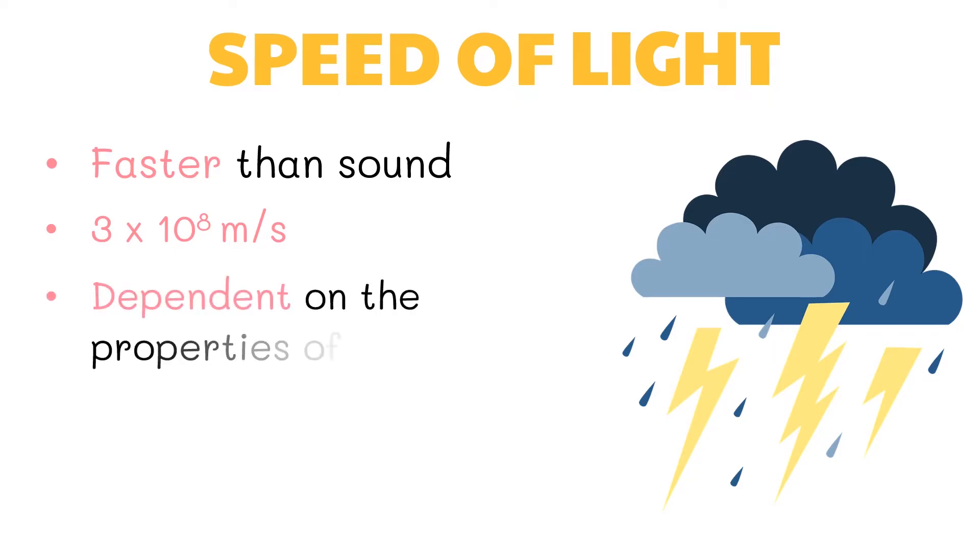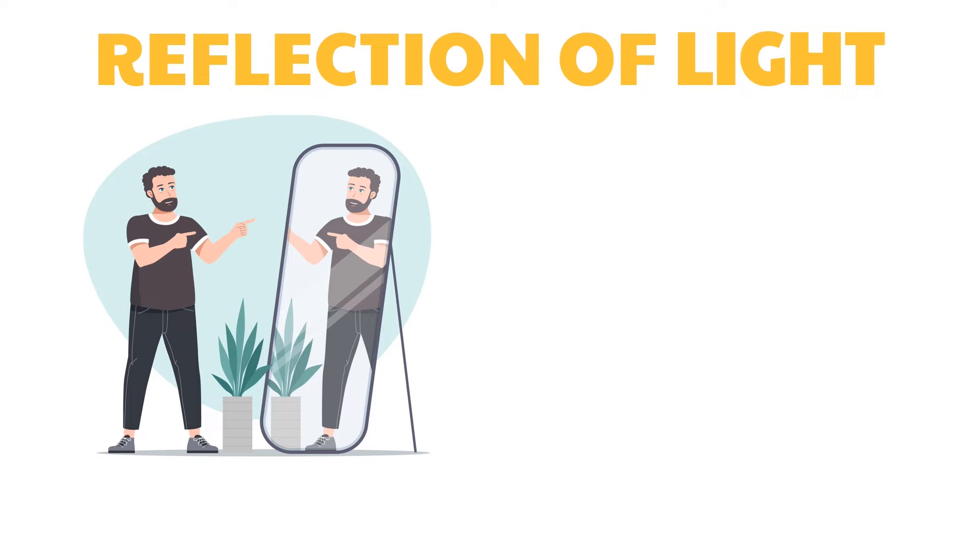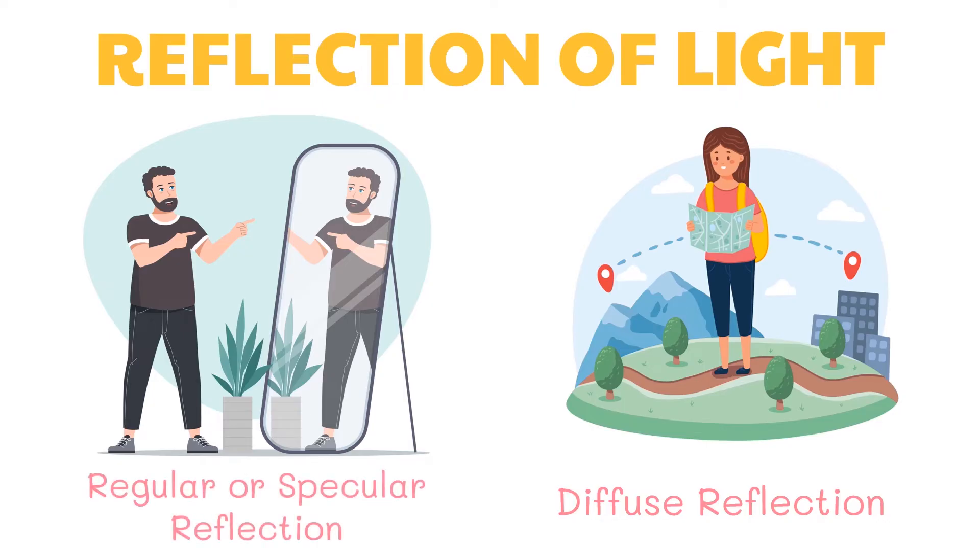When you look at yourself in the mirror, you can see your reflection, but when you look at other objects you can only see the object itself. These phenomena are caused by the way light is reflected. If light is reflected on a rough textured or uneven surface such as paper, it scatters in many directions. This is called diffused reflection. Diffused reflection allows us to see objects from any angle. On the other hand, regular or specular reflection happens when light strikes a smooth, flat, and shiny surface such as a mirror and is reflected in one direction. It enables us to see an image on the surface.